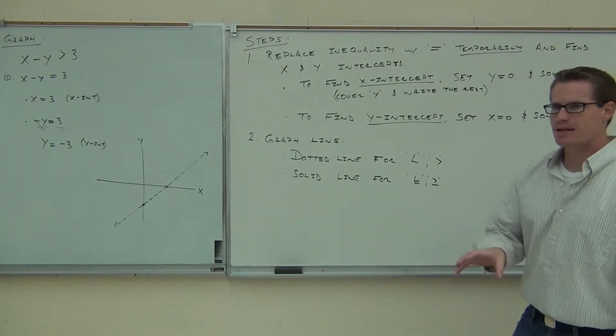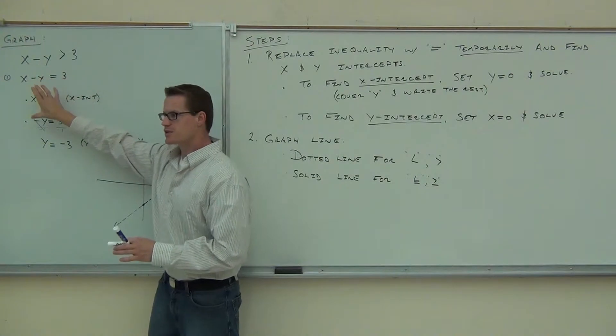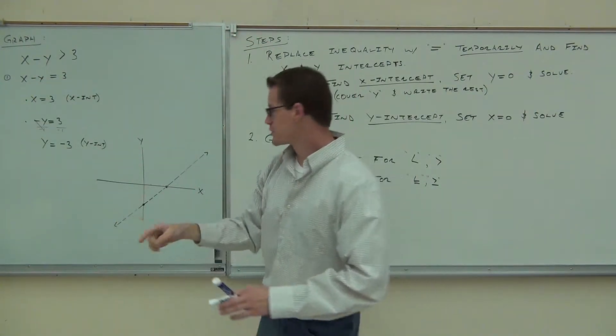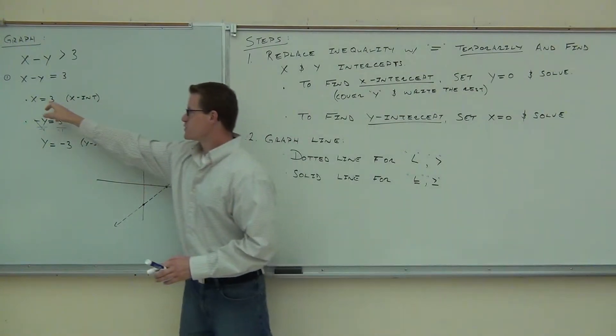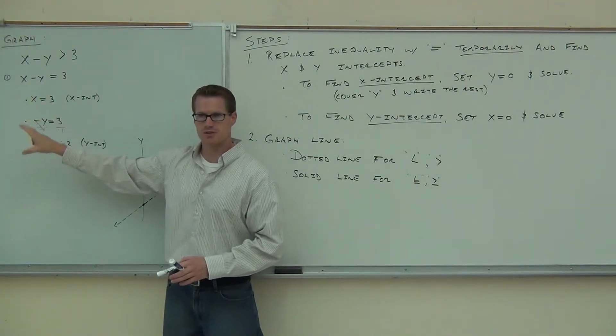Now, that's our line. Let's see if we know how to get there. First thing, we substituted an equal sign temporarily. We find each of our x and y intercepts just by covering up, rewriting the rest, and then solving. We put those things on our graph. Just go over the x-axis, go to 3. Y-axis, go to negative 3. That's what those variables are telling you to do.